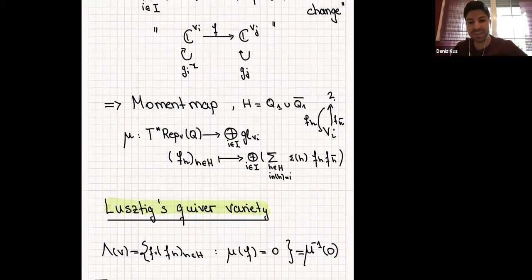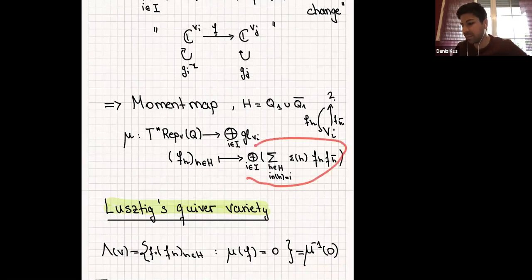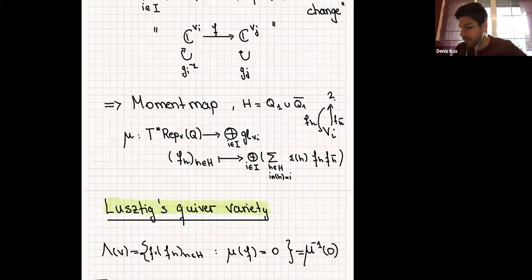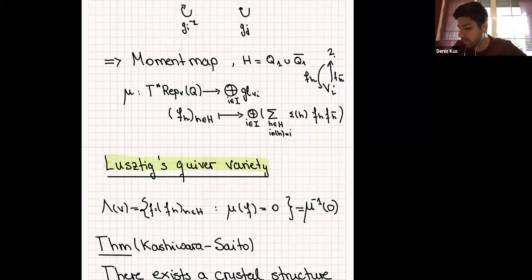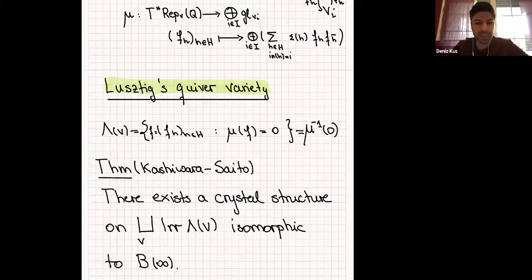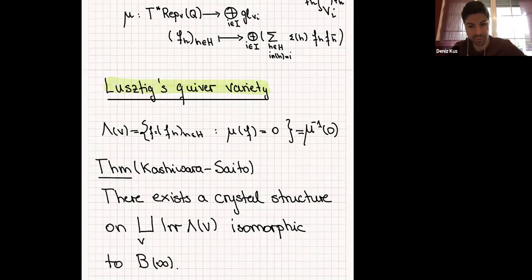Lusztig's quiver variety is just the zero fiber of this moment map. A typical element in Lusztig's quiver variety is a collection of linear maps satisfying these pre-projective relations — the quiver variety is related to representations of the pre-projective algebra. The theorem of Kashiwara and Saito from 1997 states: there exists a crystal structure on the set of irreducible components of this variety, and it is isomorphic to B∞.